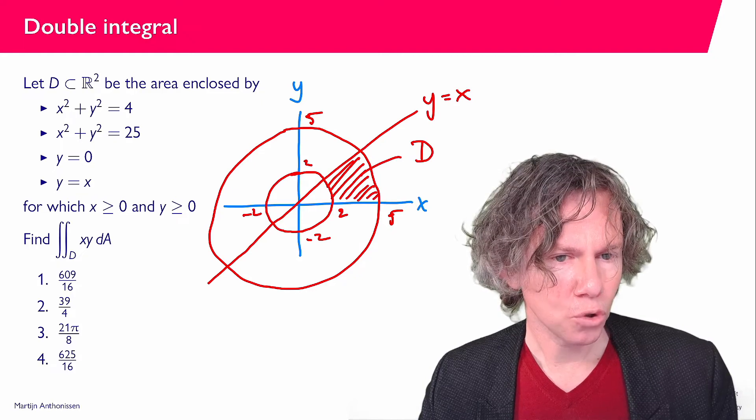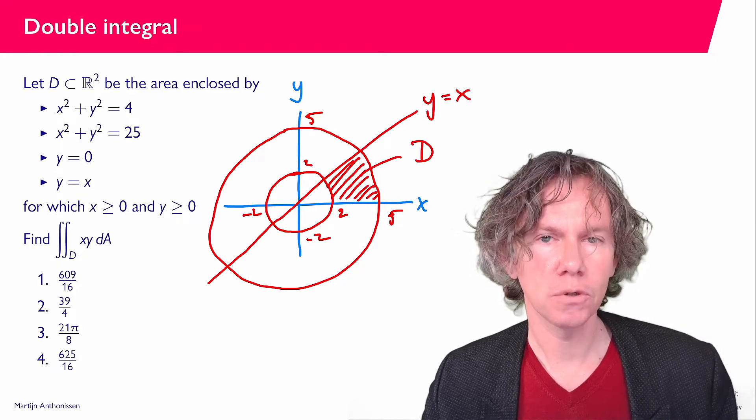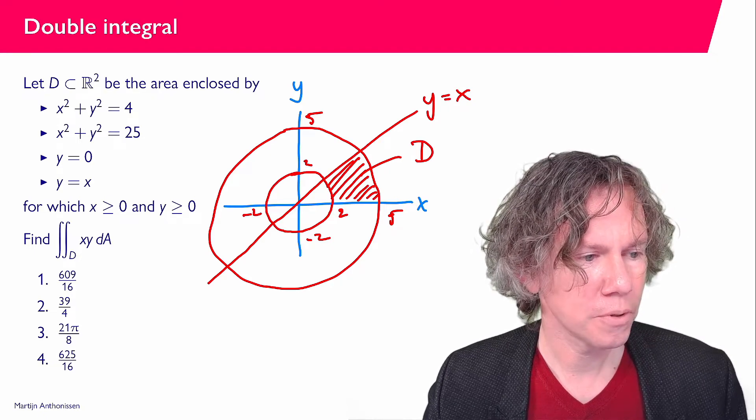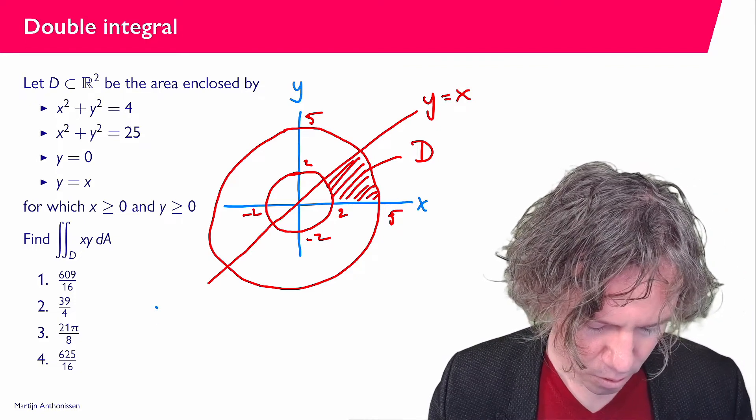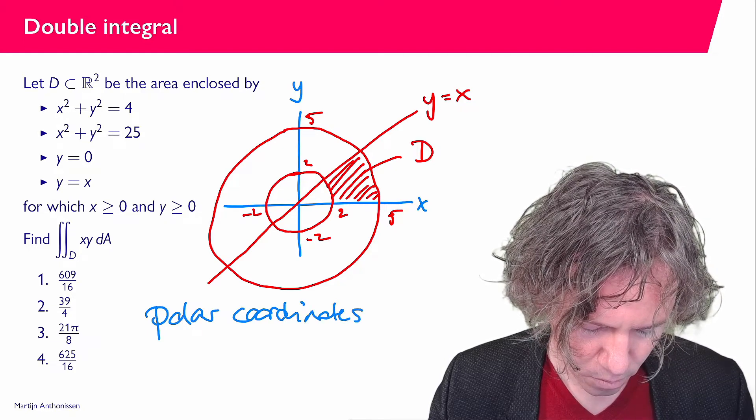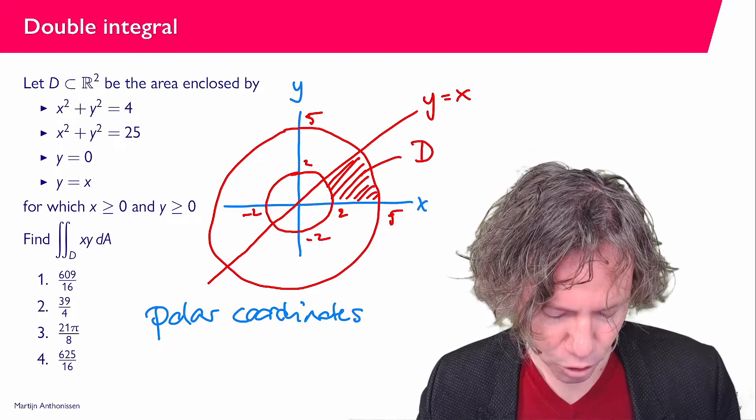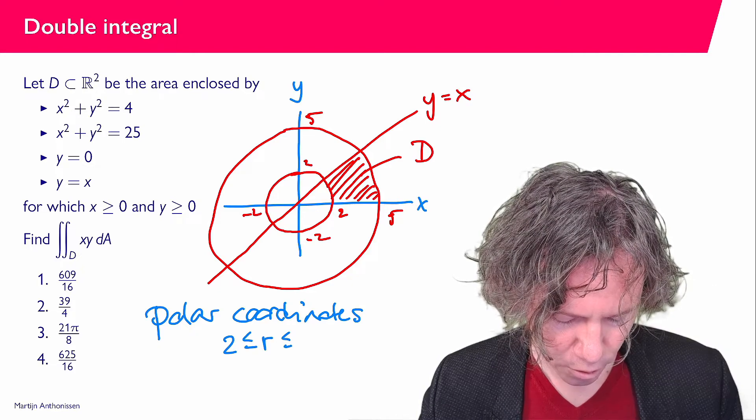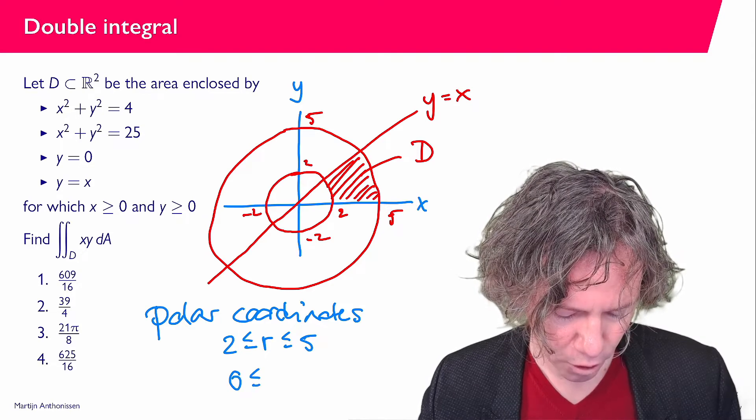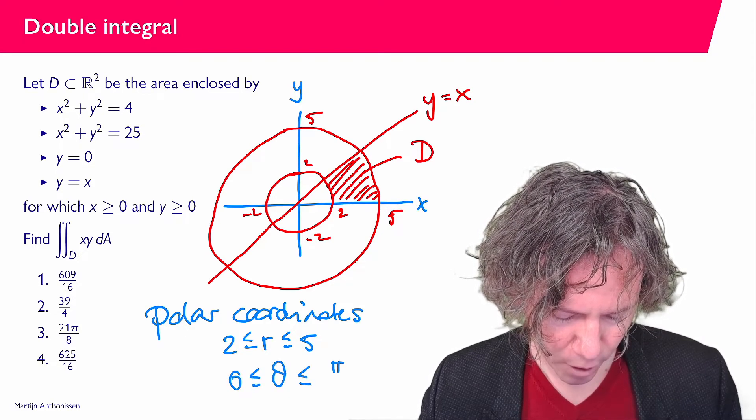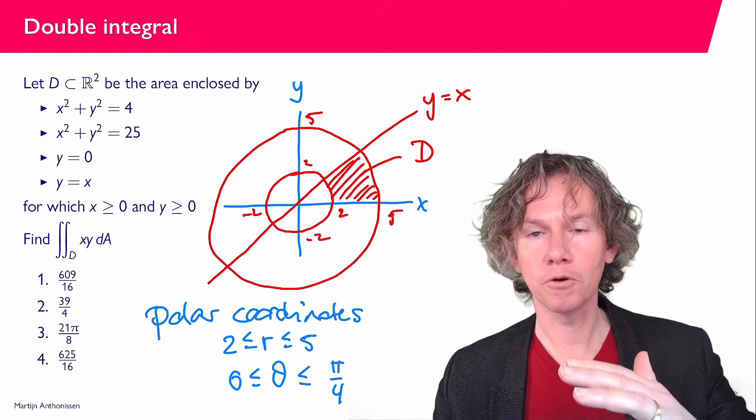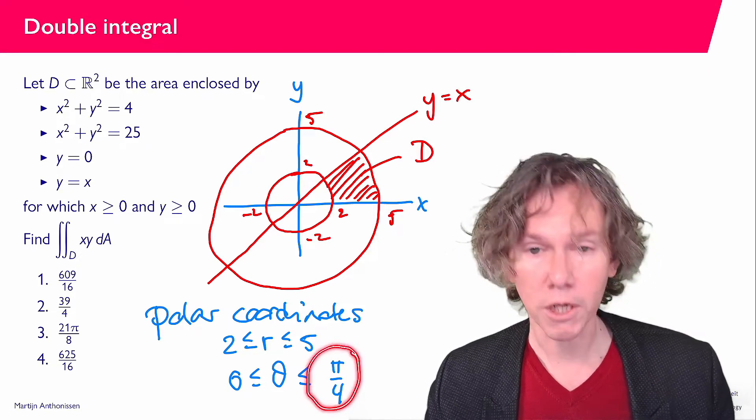And since we are working with circles here, so two of the boundaries of D are circles, it is very convenient to use polar coordinates here. So let's try to describe this region in polar coordinates. So what you see is that the radius is in between 2 and 5. So we have 2 less or equal r less or equal 5. And then for the angle theta, the angle with the positive X axis, we have 0 less or equal theta less or equal pi over 4. And this pi over 4 is due to the line Y equals X, because that makes a 45 degree angle with the positive X axis. We find that the corresponding angle in radians is pi over 4.